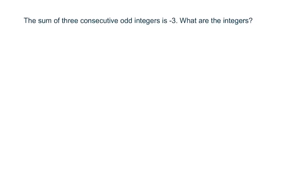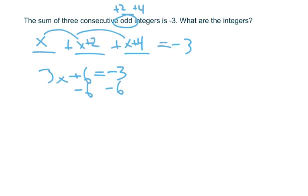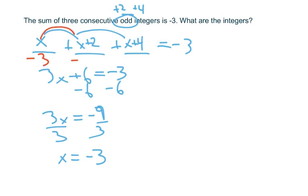Now the sum of 3 consecutive odd integers is negative 3. I set up the problem with 3 integers equaling negative 3. I start with X, but since it said odd, the next two integers are X plus 2 and X plus 4. Combining like terms: 3X plus 6 equals negative 3. Subtract 6 from both sides: 3X equals negative 9. Divide by 3: X equals negative 3. The next integer is negative 1, and adding 4 to negative 3 gives positive 1. The three integers are negative 3, negative 1, and 1.